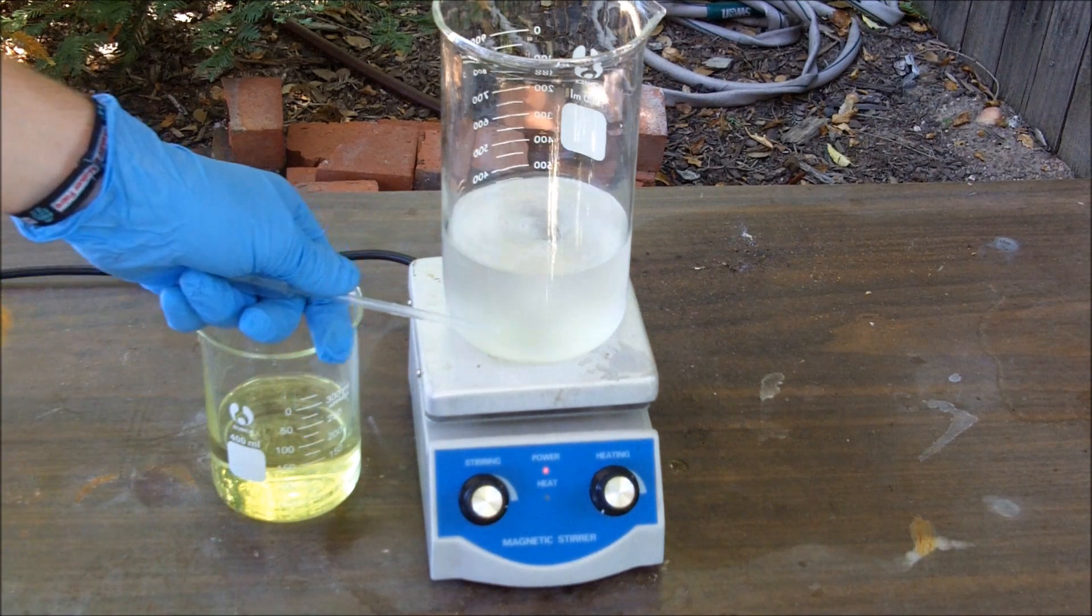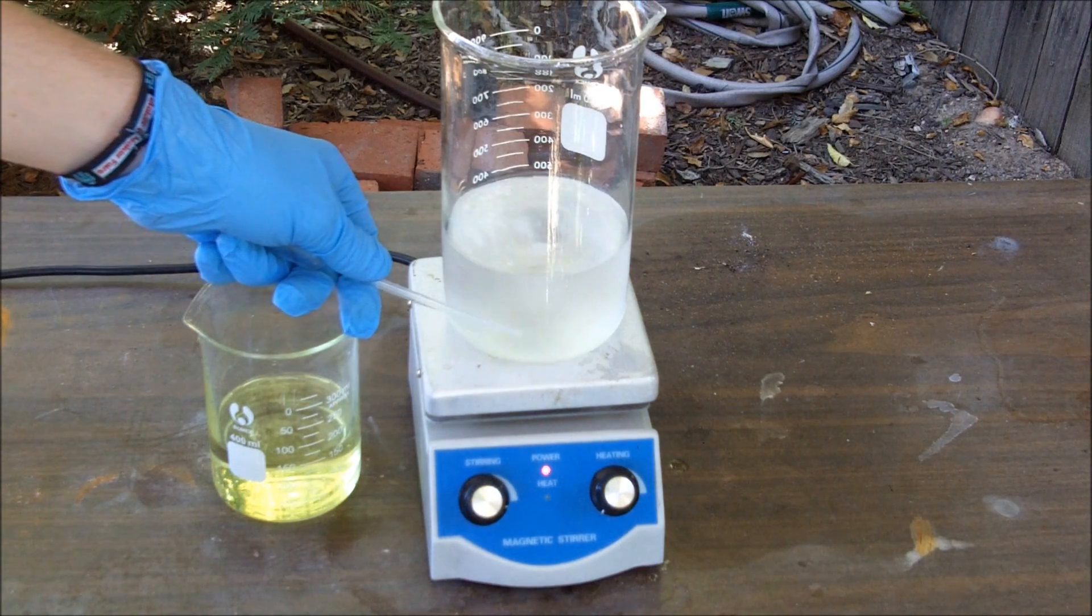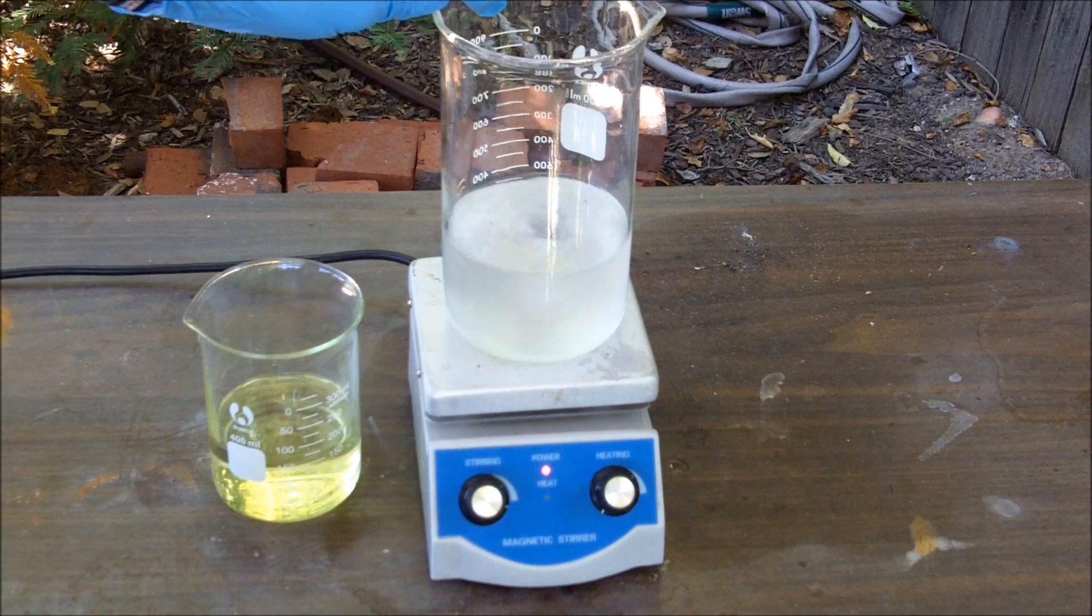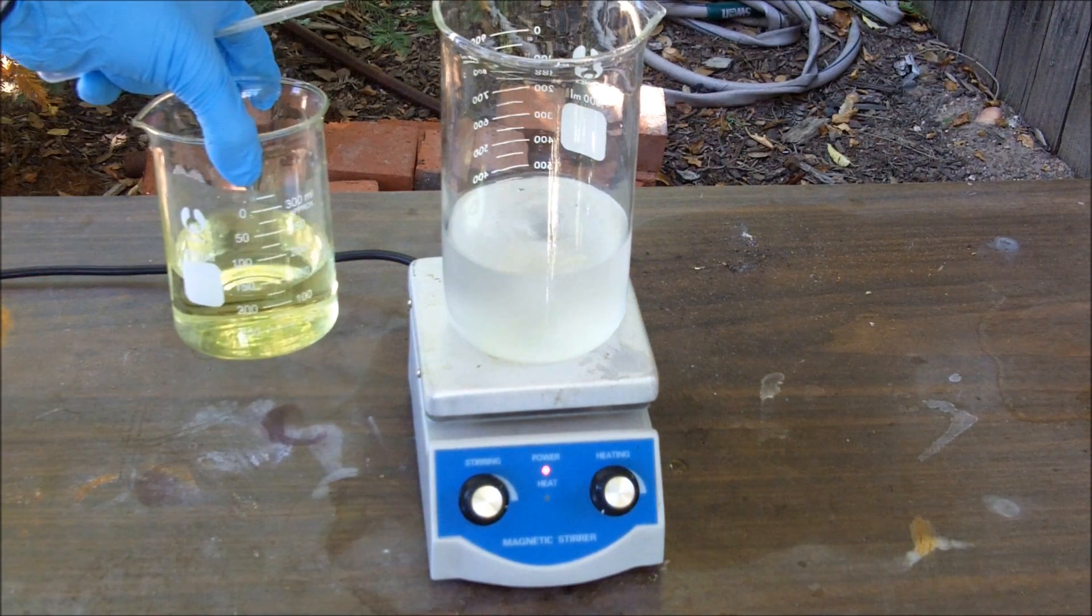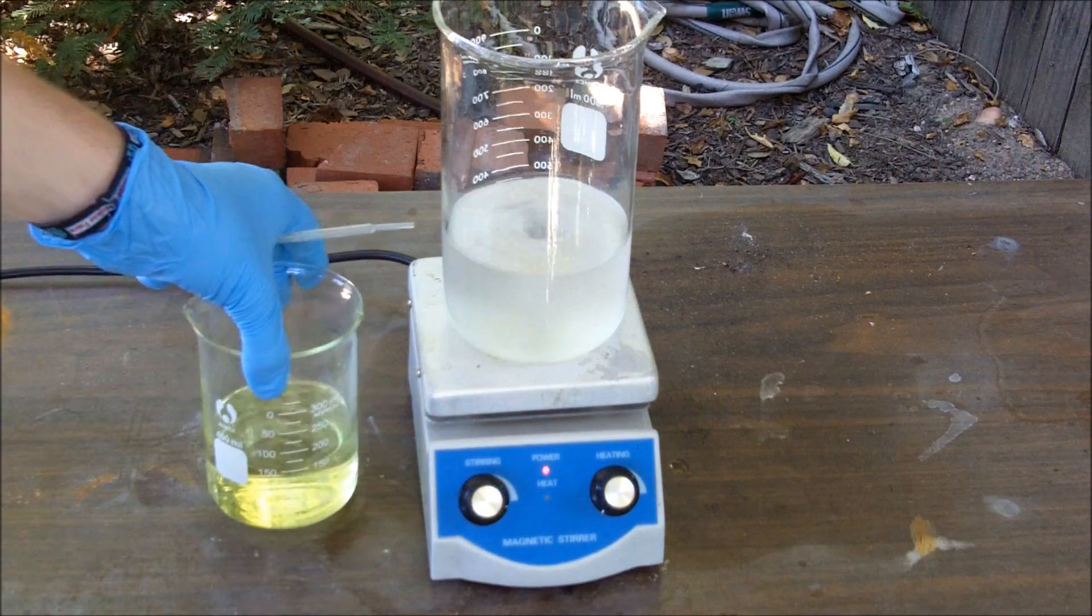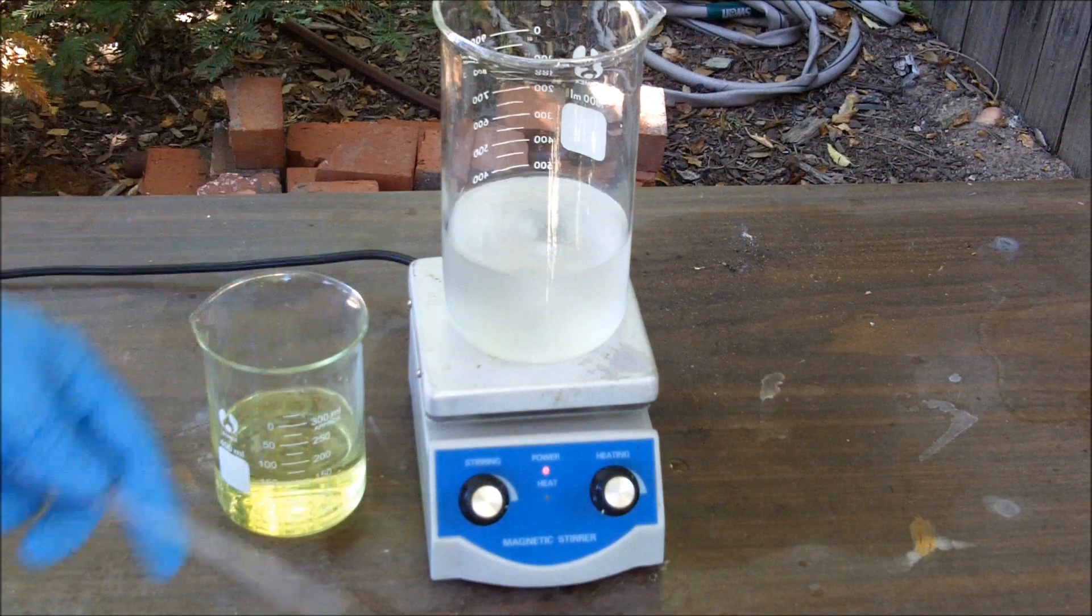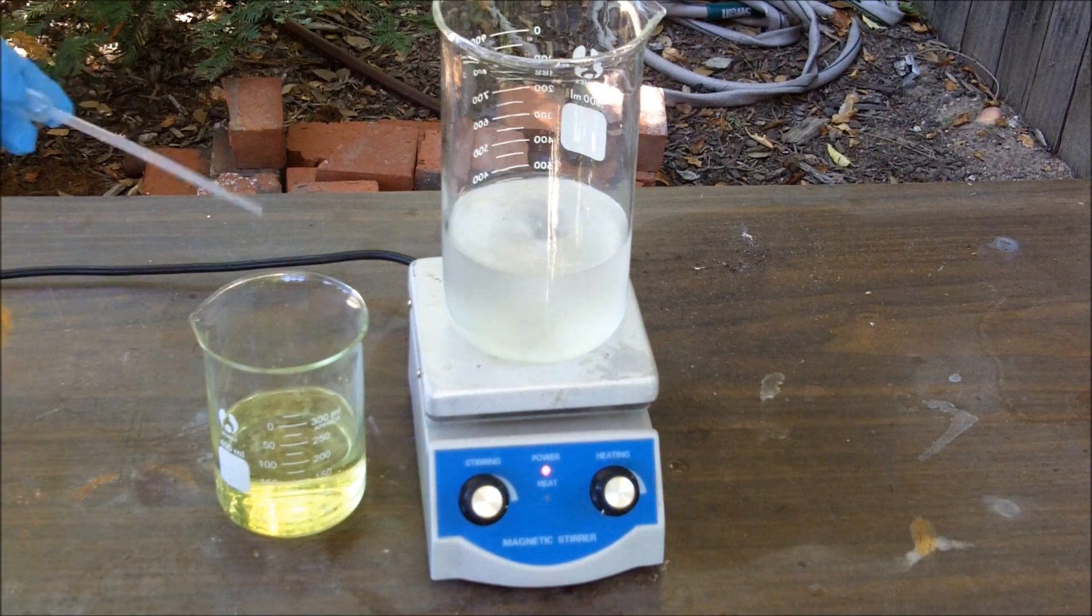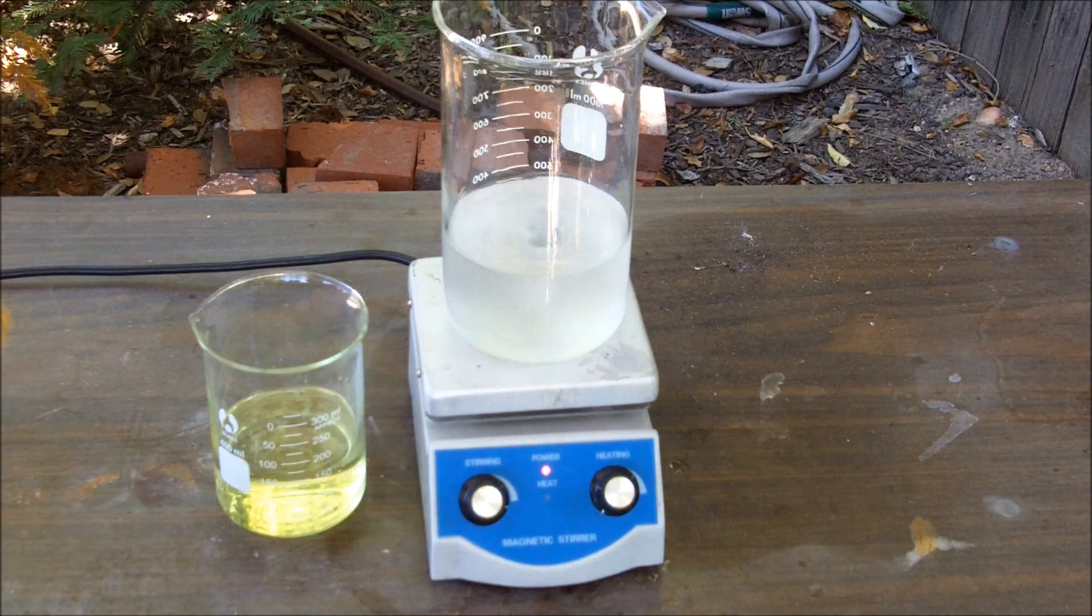So stirring right now I have 250 milliliters of concentrated ammonia and 100 milliliters of methyl ethyl ketone in a 1 liter tall form beaker. And here I have 0.25 moles or 186 grams of 10% sodium hypochlorite. This has been stirring for a while now, and I am going to be slowly adding the hypochlorite to the MEK and ammonia mix over a period of about 10 minutes.